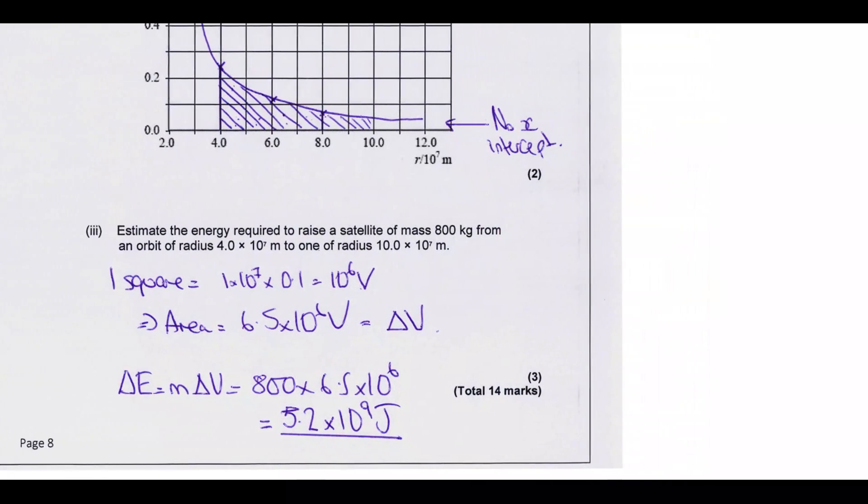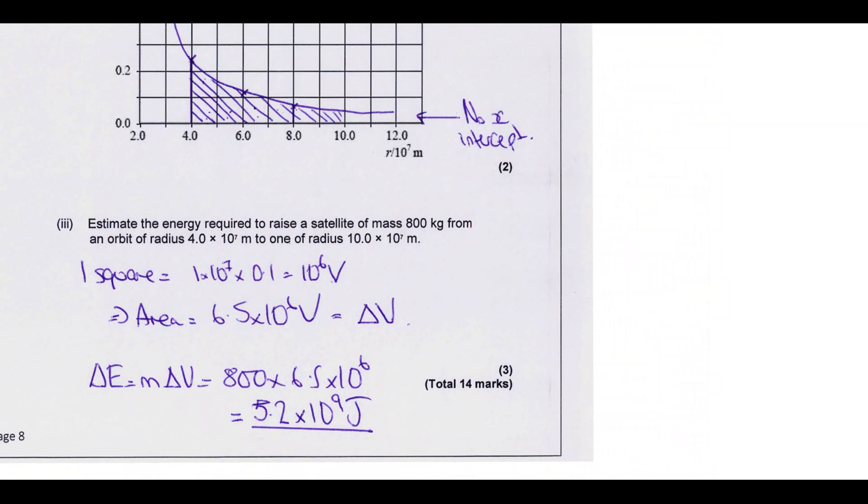So the working out the potential energy required to move from this distance from 4 to 10 times 10 to the 7 meters. So we might know that field strength is the potential gradient, so the gradient of a potential versus distance graph is the field strength. Or conversely, the area under a field strength versus distance graph is the potential. So if we find the area between two distances, that tells us how much the potential changes between those distances. So then if we multiply by the mass that's moving, we can work out what the potential energy is. So what I used, a counting squares method, so I worked out that one square is this much potential. So in this section here we've got a change in potential of around 6.5 times 10 to the 6. There's some tolerance, so you don't have to be exact. And then we've got the change in potential. We multiply by the mass. That gives us a change in energy.